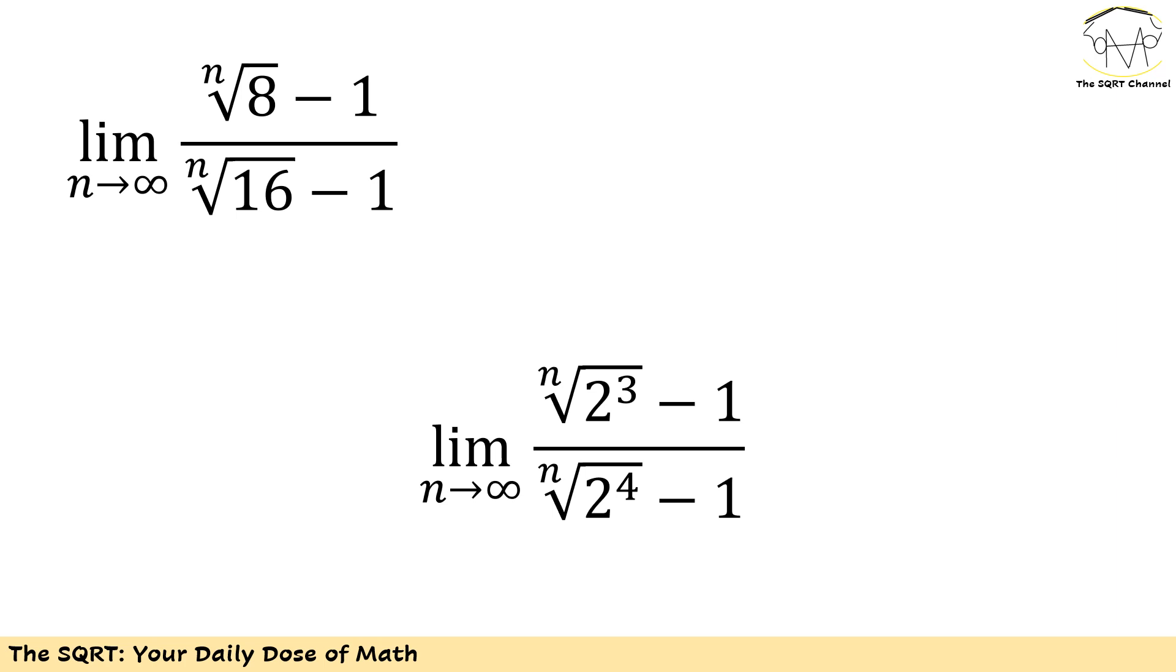When n moves towards infinity, the nth root of 8 is going to be 8 to the power of 1 over n, which becomes 8 to the power of 0, which is basically 1. So for the top of this fraction we have 0, and similarly for the bottom we also have 0. So we are dealing with 0 over 0, and we are going to see how to solve this.